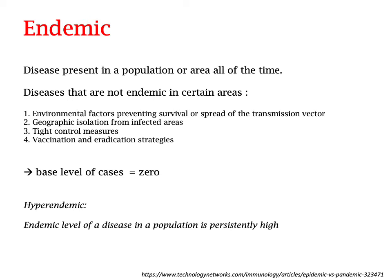Endemic is a disease that is present in a population or area all of the time. Diseases that are not endemic in certain areas might be because there are environmental factors that prevent the survival or spread of the transmission vector, like with malaria. Or because there is geographic isolation, as happens with strangles in Iceland. It could also be due to tight and effective control measures, like rabies in the UK, or effective vaccination and eradication strategies, as happened with smallpox — meaning the base level of cases is zero.